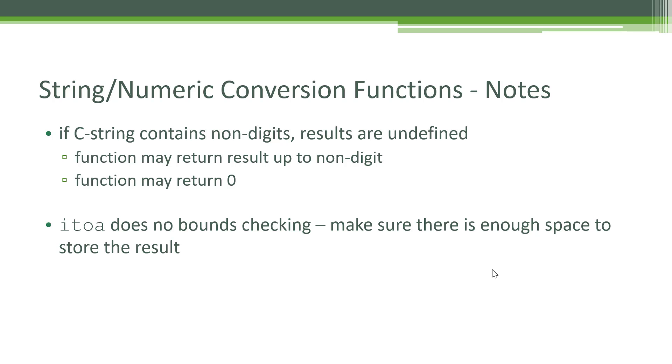If you try to convert a C string that doesn't have digits, the results are undefined. It could return a non-digit number or return zero. In the modern libraries in C++, frequently it will be defined to throw an exception. You'll be covering exceptions in CS2. When you're using the integer to character string function, be careful that you make sure there's enough room to store that result because there's no bounds checking to see that it fits into that array and could be overriding that array.